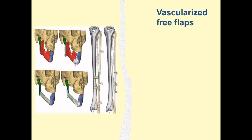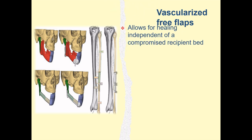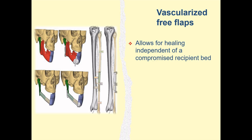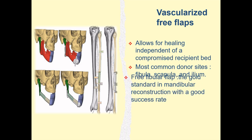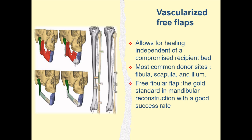Vascularized free flaps allow for healing independent of a compromised recipient bed, as they have their own blood supply. Common donor sites include the fibula, scapula, and ilium. Donor site flaps have different characteristics depending on the length of the vascular pedicle, quality, quantity, availability and length of bone, soft tissue skin paddle, and possibility of osteotomy. The free fibula flap is the most commonly used and is considered the gold standard in mandibular reconstruction with a good success rate.